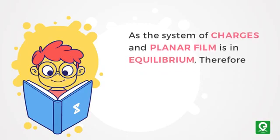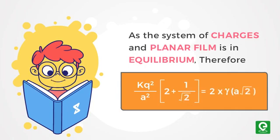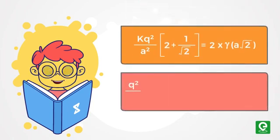therefore K Q squared upon a squared times (2 plus 1 by root 2) equals 2 times gamma times a root 2. Simplifying, Q squared upon a squared times constant equals gamma a times constant.